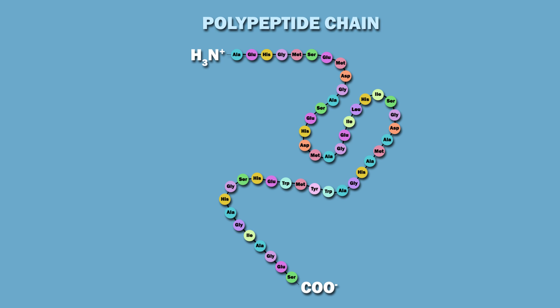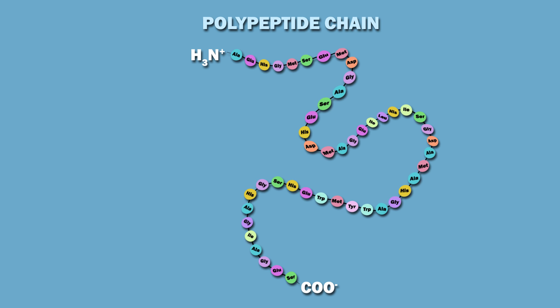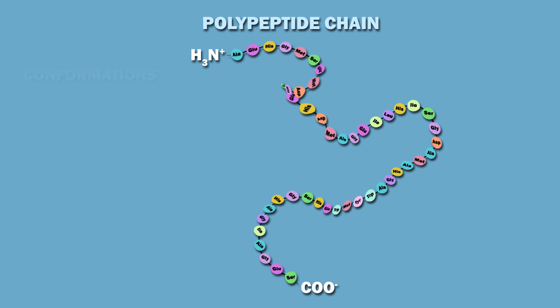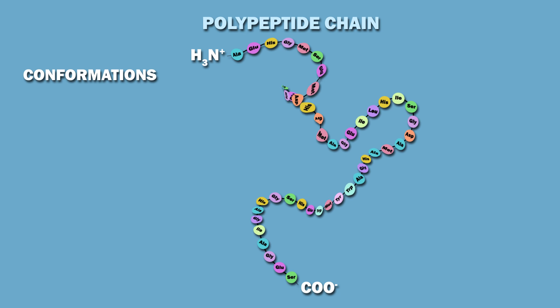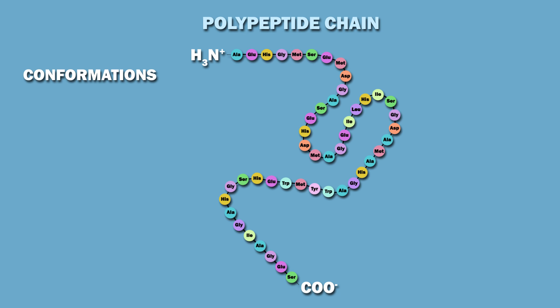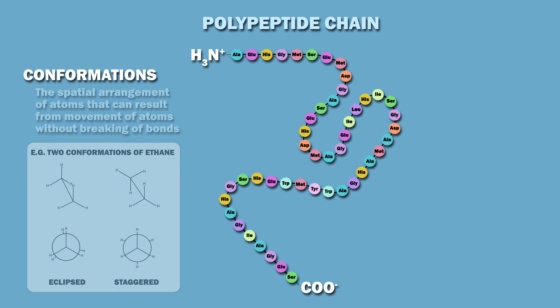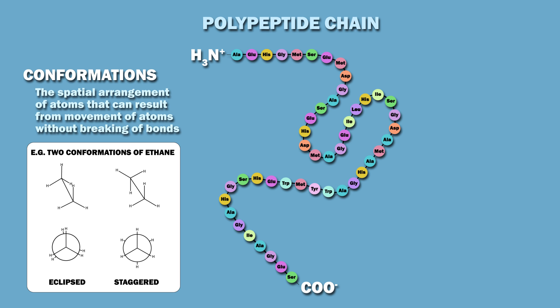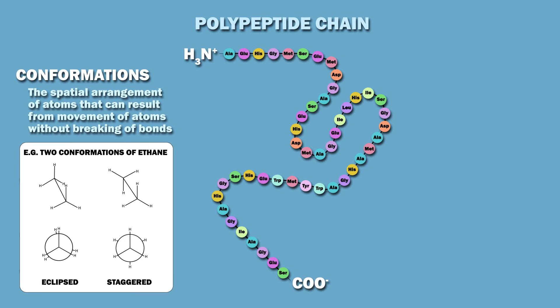The polypeptide chain can fold in many different ways called conformations. Conformations are the spatial arrangement of atoms that can result from movement of atoms without breaking of bonds.